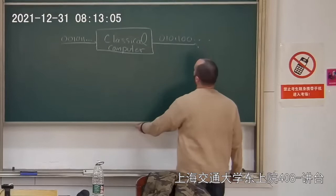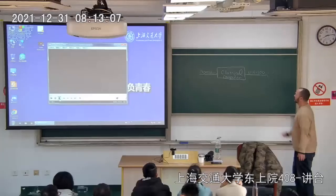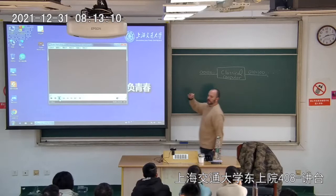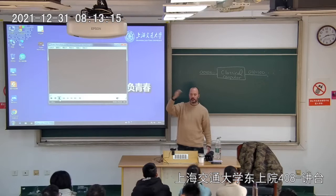But with a quantum computer, the first unit is a bit. What is a bit? A bit is just something that can be in one of two states. Usually the two states are called zero, one, on, off, black, white, up, down — something like that.